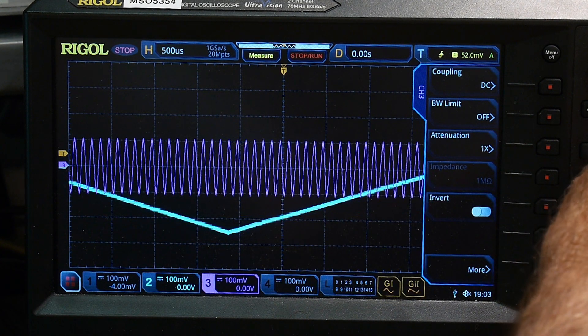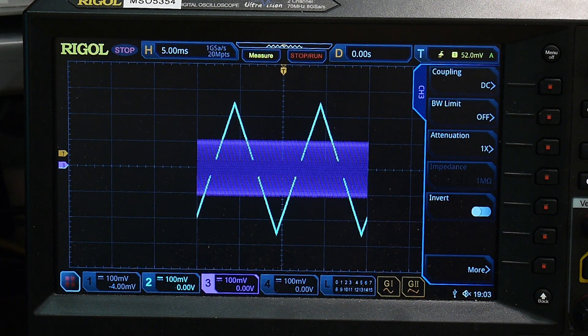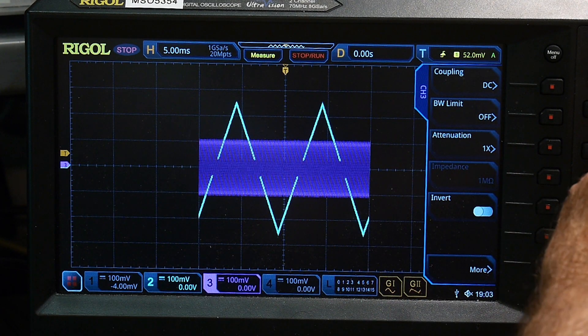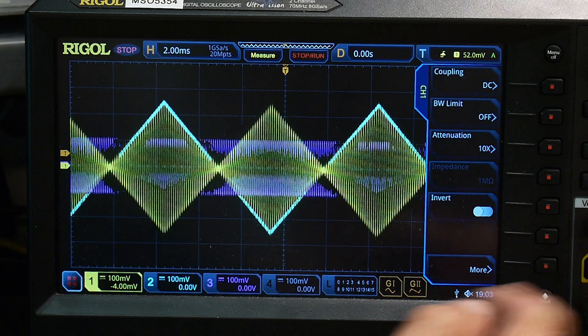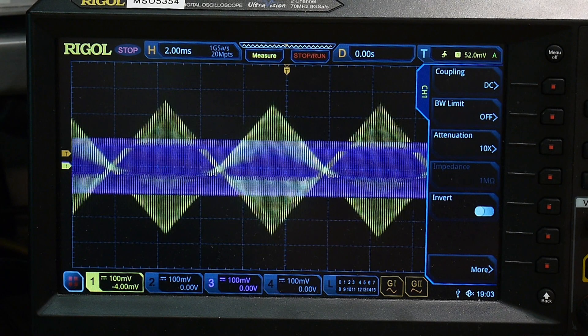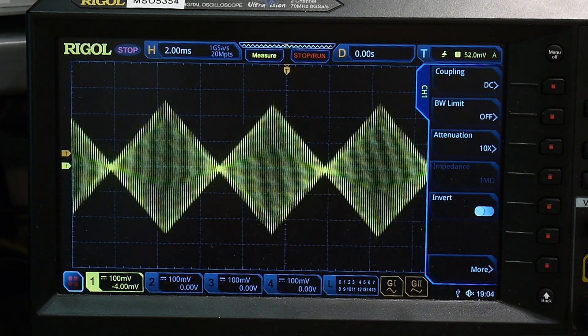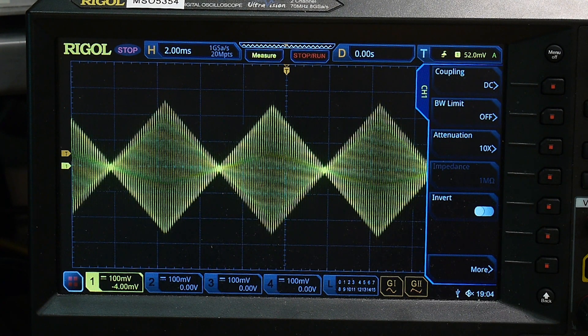And B is this triangle wave. All right. So we have A and we have B. And we are going to multiply them together. And we get that. Let me turn off A and B. We get that. So it's basically AM modulating the signal.